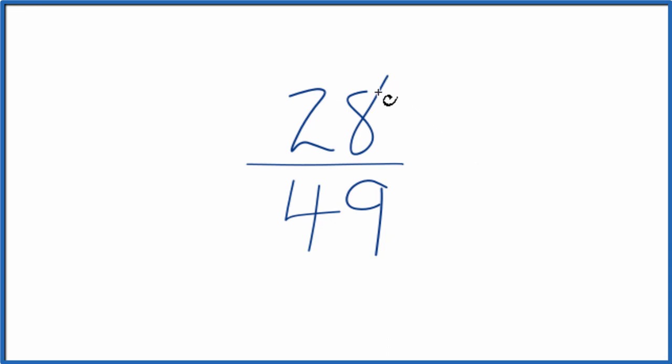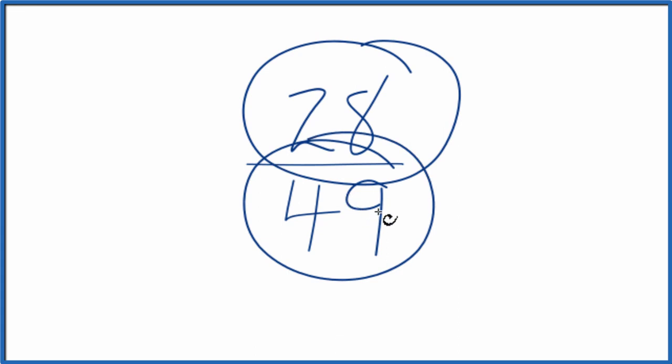So we need to find a common factor, the greatest common factor, that goes into both 28 and 49 evenly.